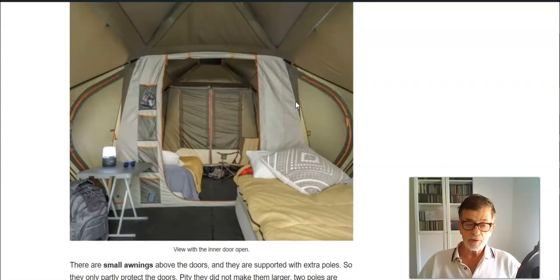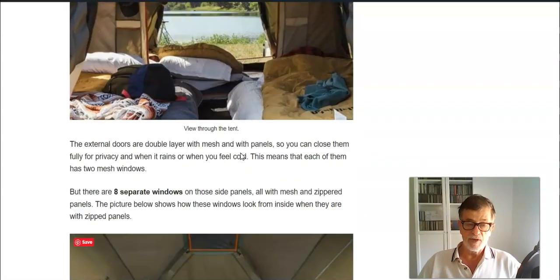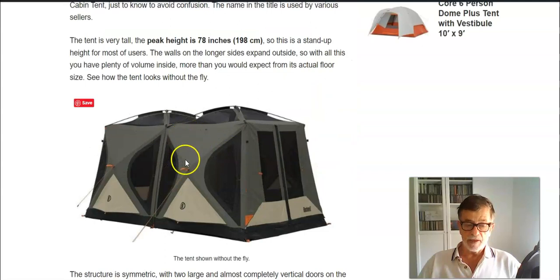I would describe it as semi-instant, and the meaning of this is that you have these X-crossed poles here - they are pre-attached to the tent and they remain there all the time. So you simply pull those ropes, the orange ropes that you see here, and then the tent simply expands out. You also push up those two panels on the ceiling.